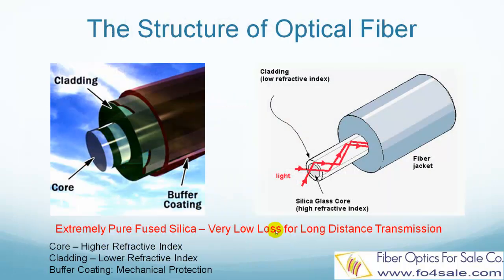The previous video gives us a basic idea of how light would travel inside a fiber. Now let's see what a glass fiber is composed of. A glass fiber has a cylindrical structure and is composed of three layers. At the center is a core.